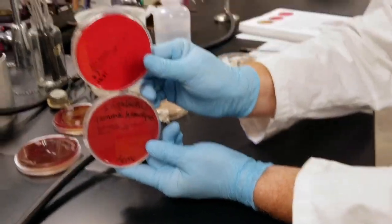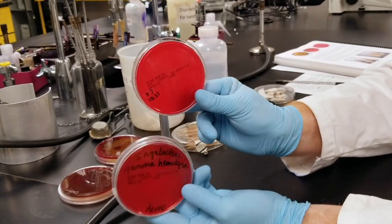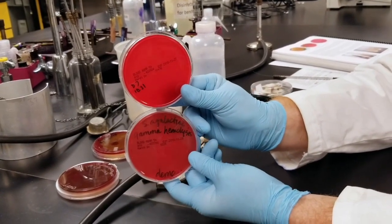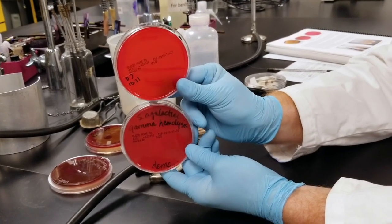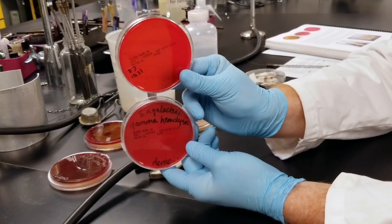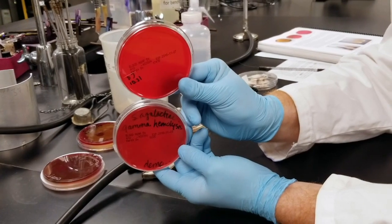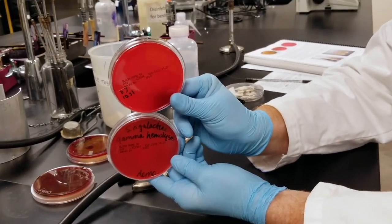So you have a plate that, mind you, this is also an old plate to kind of describe some of the discoloration. But you have a fresh sterile plate and then gamma hemolysis, you see that there's not much change.